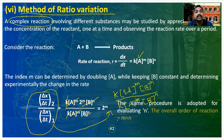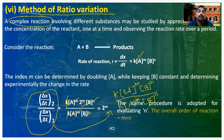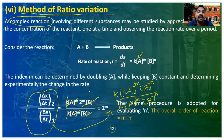By determining the values of m and n separately, we can calculate the overall order as m + n. This is the ratio variation method. In summary, the six methods to determine the order of a reaction are: first, integration method; second, half-life method; third, isolation method; fourth, Van't Hoff differential method; fifth, graphical method; and sixth, ratio variation method.